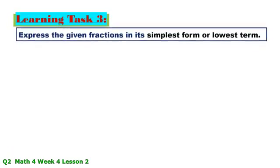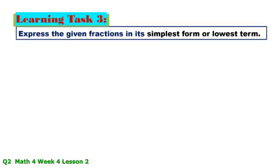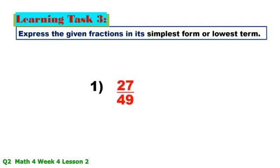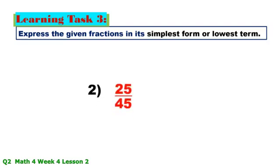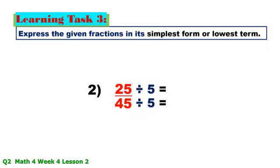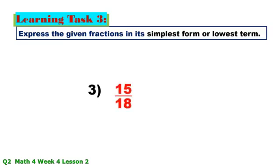Number 12: 17/14 — in simplest form. Learning Task 3: Express the given fractions in their simplest form or lowest term. Number 1: 27/49 — the GCF is only 1, so the answer is 27/49. Number 2: 25/45 — GCF is 5; 25 ÷ 5 = 5, 45 ÷ 5 = 9. Number 3: 15/18 — GCF is 3; 15 ÷ 3 = 5, 18 ÷ 3 = 6.